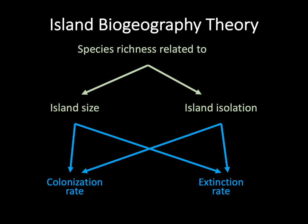Just to be clear, isolation refers to how far an island is from an area where species could colonize the island from. We would typically say isolation reflects the distance between an island and the mainland area where all the species that potentially could colonize that island occur.